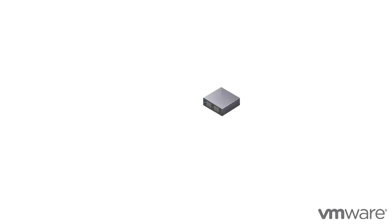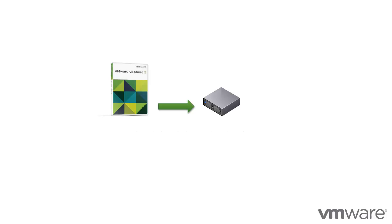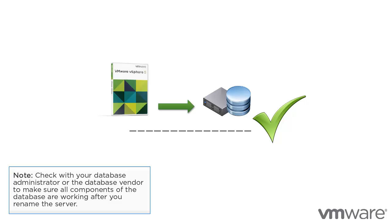The machine on which you install or upgrade the vCenter Server must have a computer name that is 15 characters or fewer. If your database is located on the same machine and you have recently changed the name of this machine to comply with the name length requirement, make sure the vCenter Server DSN is configured to communicate with the new name. Changing the vCenter Server computer name can impact database communication if the database server is on the same computer. The name change has no effect on communication with remote databases, so you can skip this procedure if the database is remote.